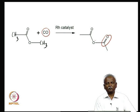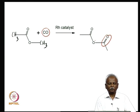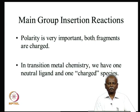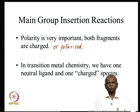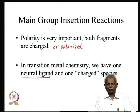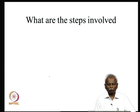In main group insertion reactions, polarity is very important — both fragments must be charged or polarized. In contrast, in transition metal chemistry, a neutral ligand can undergo insertion. Neutral species can be added using organotransition metal chemistry, whereas polar compounds can be added using main group organometallic chemistry. Let us now look at the steps involved in this insertion process.